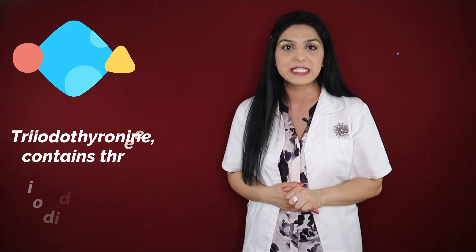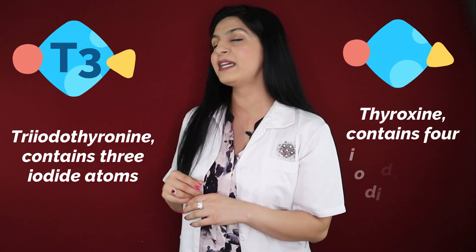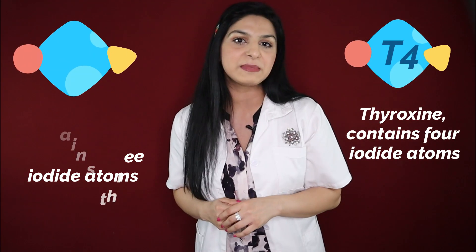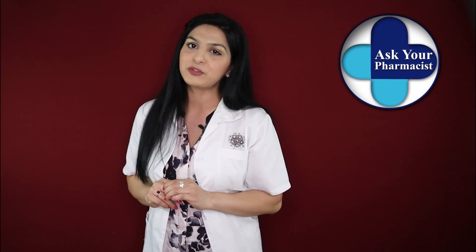The thyroid gland is able to control your metabolism with the help of two main hormones: T3 and T4. In normal circumstances, when your thyroid is working properly, it'll maintain the right amount of T4 and T3 hormones and keep your metabolism working at the right rate.